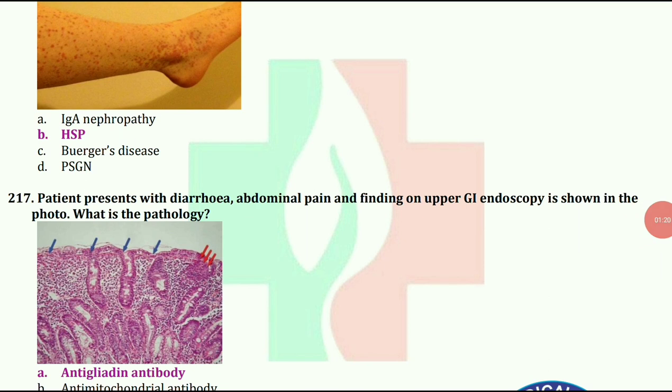Patients present with diarrhea, abdominal pain, and findings on upper GI endoscopy are shown in the photo. What is the pathology? The answer is anti-gliadin antibody.